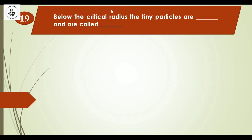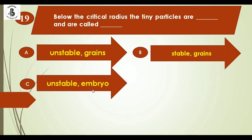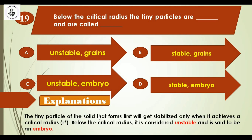Question 19: Below the critical radius, the tiny particles are which and are called as — Option A: unstable grains, Option B: stable grains, Option C: stable embryo, Option D: unstable embryo. Tiny solid particles get stabilized only when they achieve a critical radius. Below the critical radius they are considered unstable and are called embryos. The right answer is option D: unstable embryo.